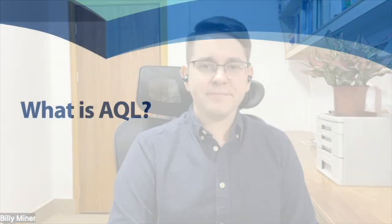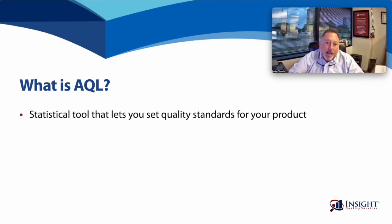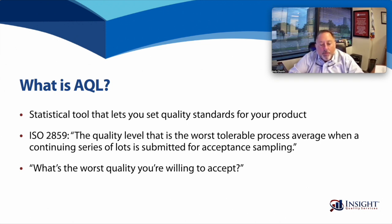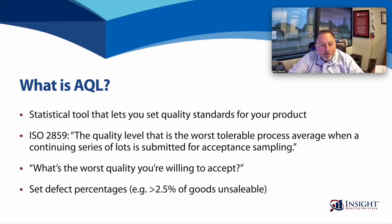Let's start off with the most basic question: what is AQL? AQL is a statistical tool that allows you to set specific standards for your product and verify that you are on track to meet them over time. The definition based on ISO 2859 is the quality level that is the worst tolerable process average when a continuing series of lots is submitted for acceptance sampling. In simple terms, that means: what's the worst quality you're willing to accept? To use AQL, you set defect percentages for your product — for example, no more than approximately 2.5% of my goods should be defective — and then you regularly inspect your goods at the factory.